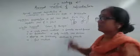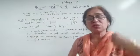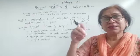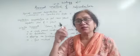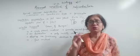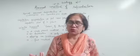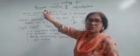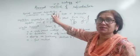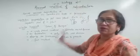Then gemmules. These are found in fresh water sponges. These are endogenously formed. Yeh andar bante hai spores, or you can say buds, which afterwards give the new sponges. So these are some special structures which help in asexual reproduction.